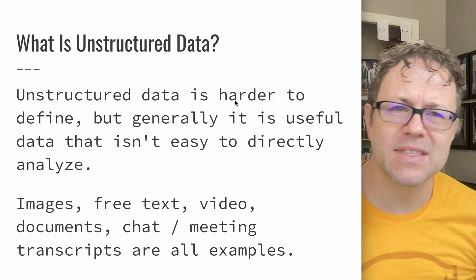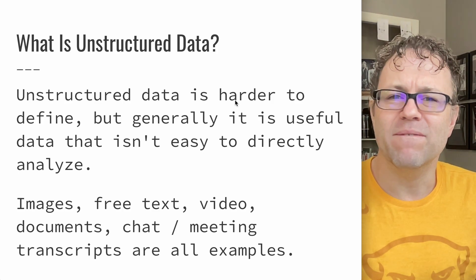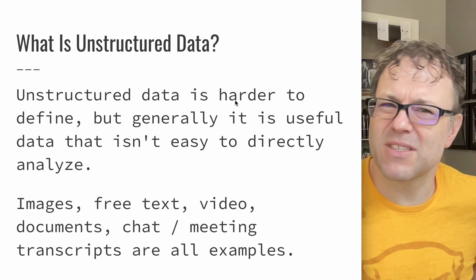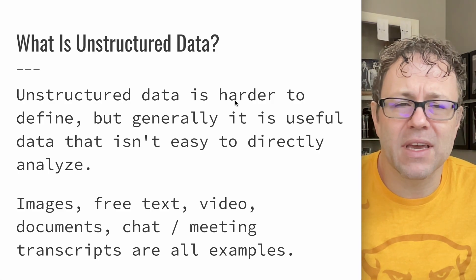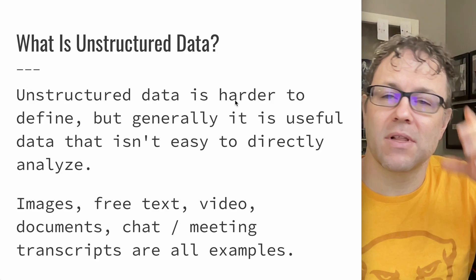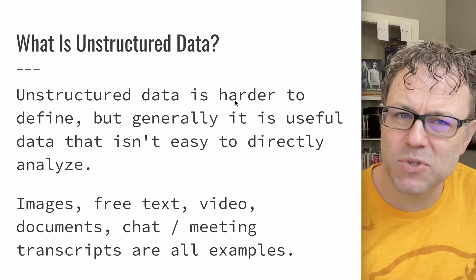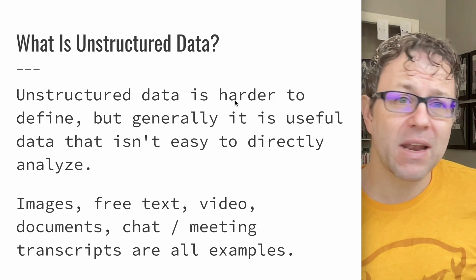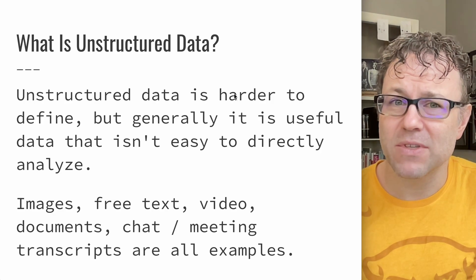Things like images, things like free text — a book might be unstructured data or mostly unstructured data. Video is typically unstructured data. Documents are kind of a space where there's a little bit of structure, but tends to be a lot less structured — more like free text, natural language type of things. Meeting transcripts, chat transcripts — these are all examples of data that is mostly unstructured. Some of these are going to have some structure, and sometimes you need to apply some structure or metadata to these different types of data, but ultimately these are all examples of unstructured data.